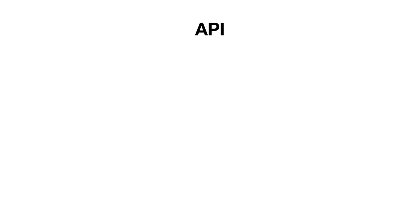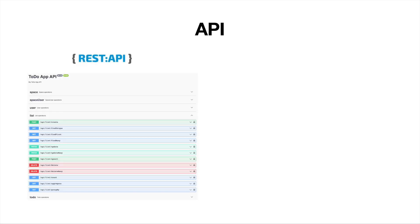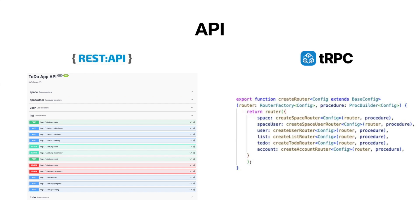In many scenarios, you can eliminate the need for writing extensive back-end code, as ZenStack automatically generates RESTful APIs through its integration with the majority of Node.js frameworks. It can also generate tRPC routers if your app uses tRPC for the API layer.